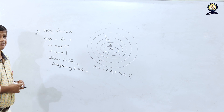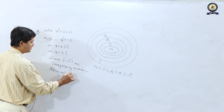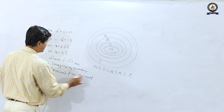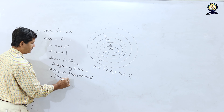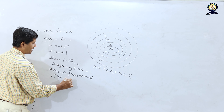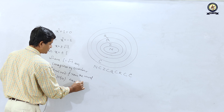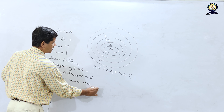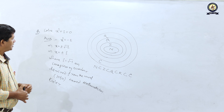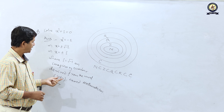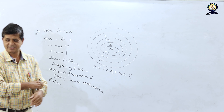The symbol i is derived from the word iota, which is a Greek letter, and it was named by the mathematician Euler (E.U.L.E.R). So i = √(−1), derived from the Greek letter iota, introduced by Euler.